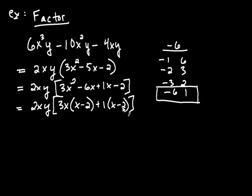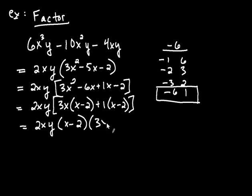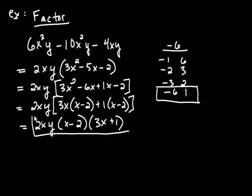Now both products share the factor x minus two, so that gets factored out. The result is two x y times x minus two times three x plus one. At this stage there are no longer brackets because it's all multiplication — once you're down to all multiplication, you no longer need brackets. This is our final answer. Notice this problem again involved multiple techniques: we made use of GCF and factoring using the AC method.